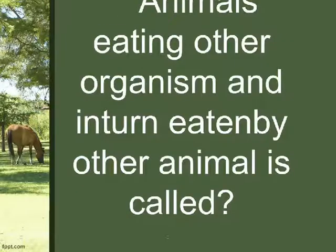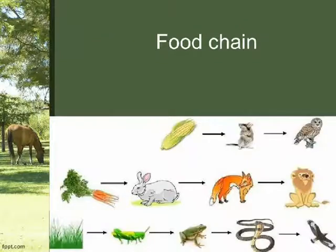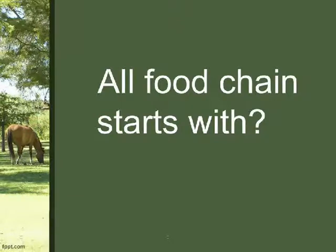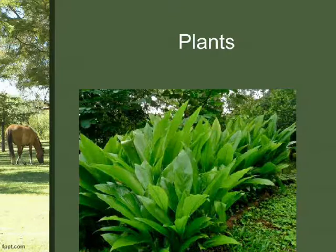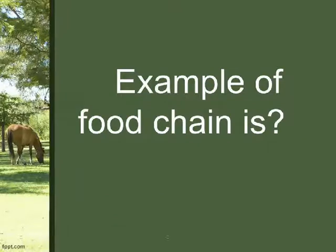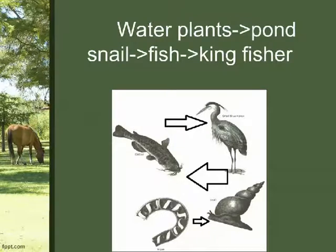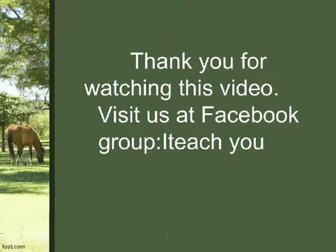Animals eating other organisms, and in turn being eaten by other animals, form a food chain. All food chains start with plants. An example of a food chain is: water plants eaten by pond snail, eaten by fish, eaten by kingfisher.